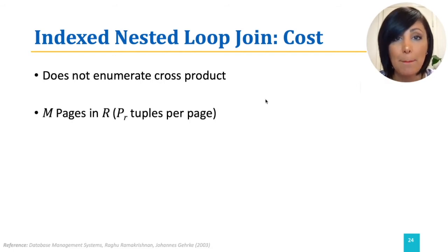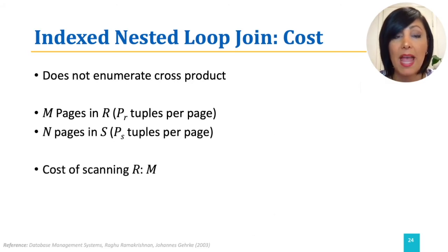Let's consider that we have N pages in relation R, each page containing PR tuples. Cost of scanning R is still the same, M, because we need to load M pages into the memory.